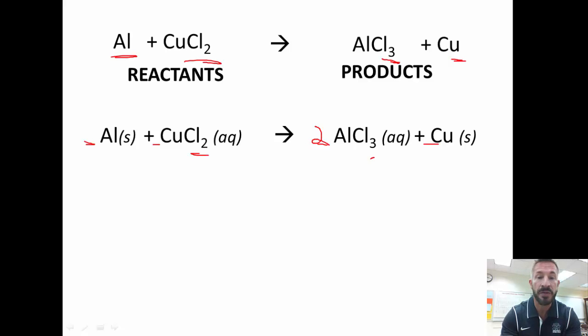So, what we do is we say 3 times 2 is 6. So, we put a 2 here. And then we know that we also need to even out the number of chlorines on this side. So, 2 times 3 is 6. So, we put a 3 here. So, now we have 6 chlorines on each side.